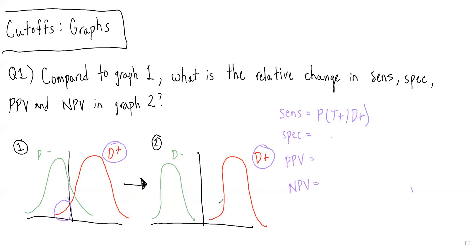In graph two, all of the disease-positive graph lies to the right of our cut-off, and therefore sensitivity is basically maxed out. Therefore, compared to graph one, graph two will have a higher sensitivity.